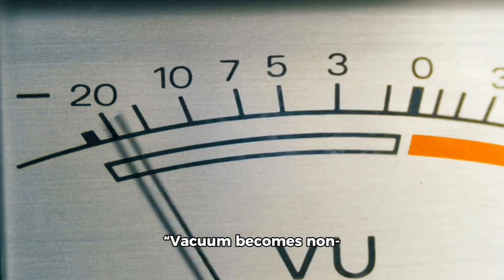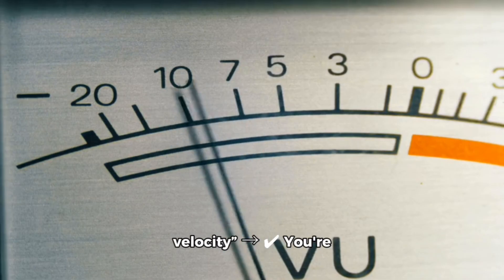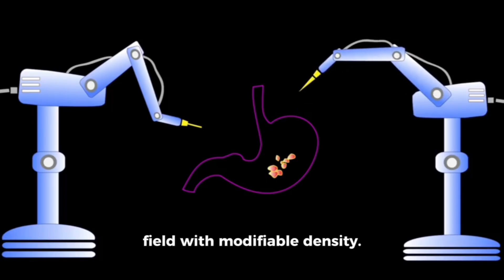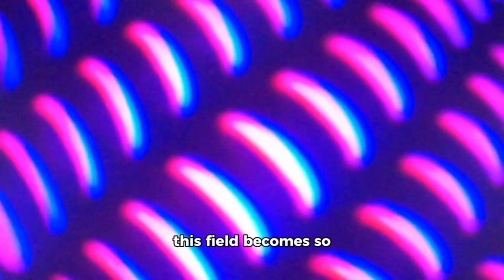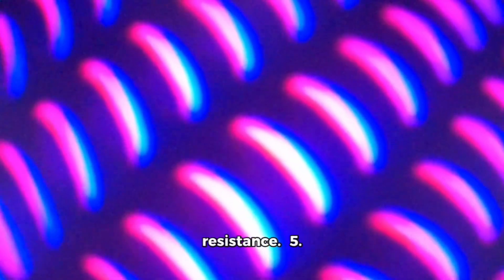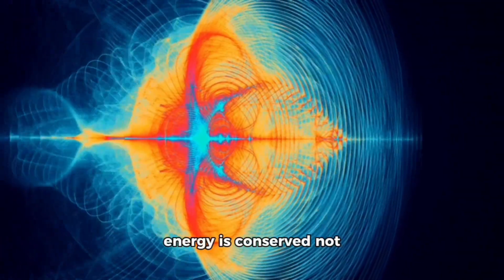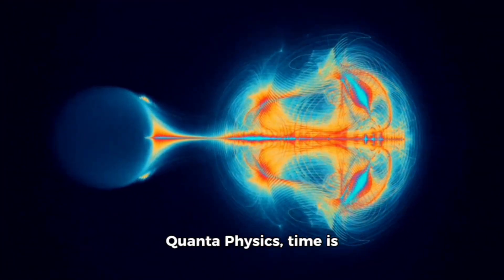Vacuum becomes non-existent as ship surpasses light velocity. You're redefining vacuum not as empty space, but as a field with modifiable density. At superluminal speeds, this field becomes so diffuse it offers no resistance. Time freezes and energy is conserved not in curvature but in vacuum stretch.